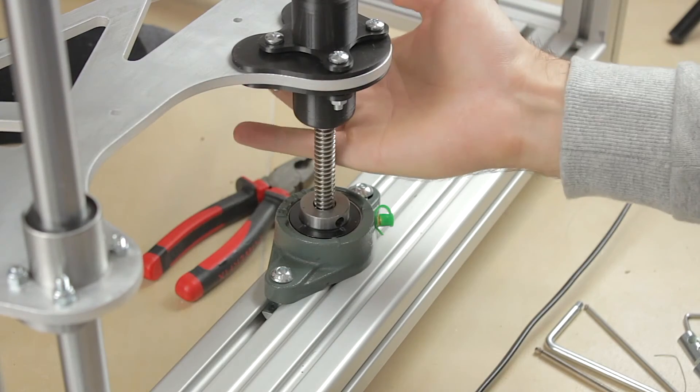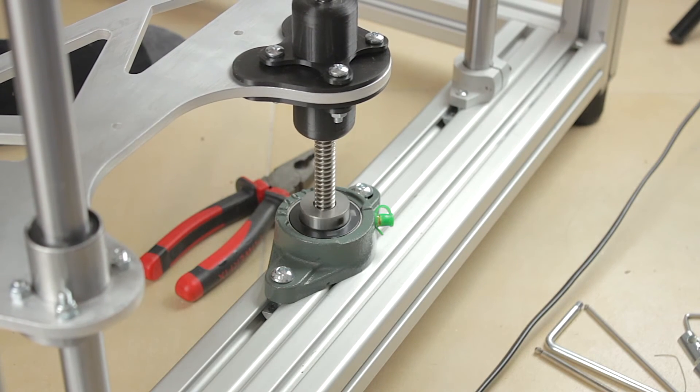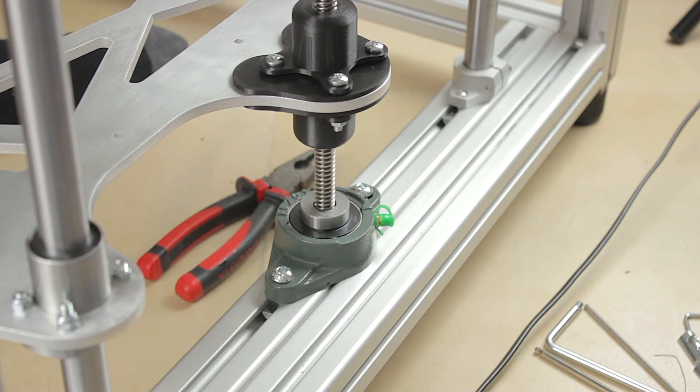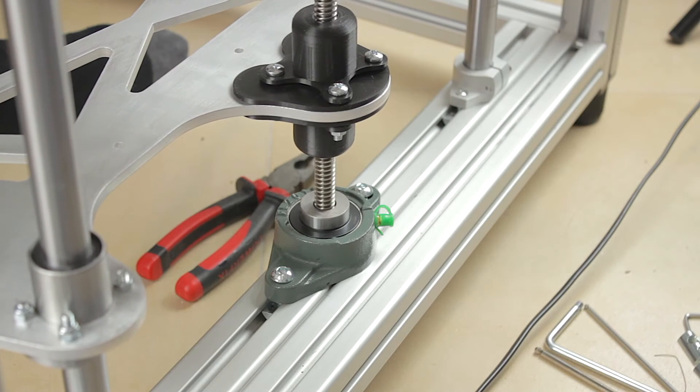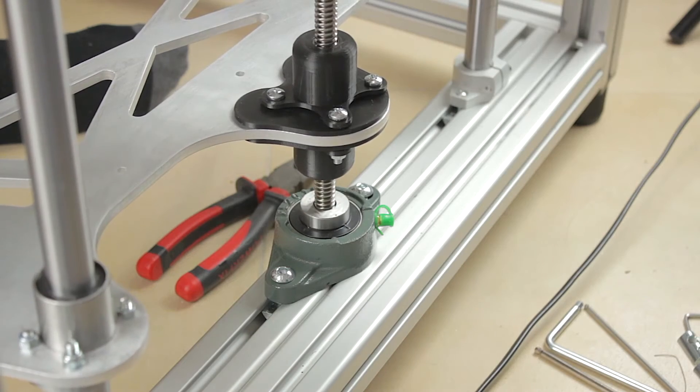Now I'm going to make a quick test with the threaded rod to check if it works. As you can see it works manually, but there is a bit of noise caused by the friction of the two nuts with the threaded rod. We'll see how we fix that in the future, but the important part is that it actually moves.